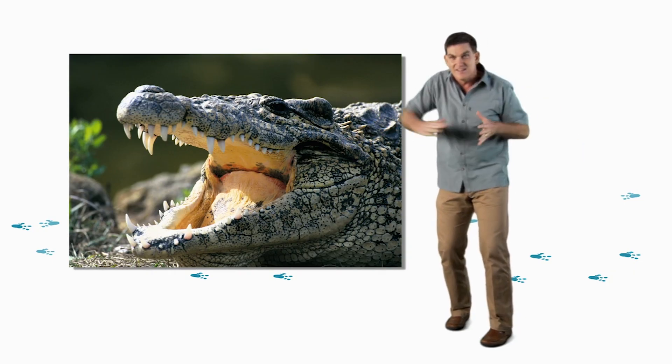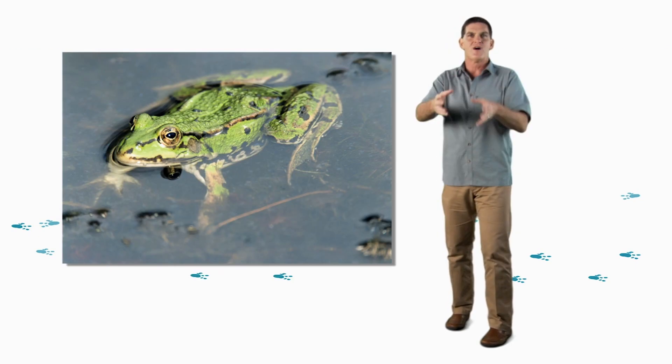That's cool. Paleontologists have also found trackways of sprawling crocodiles and slithering snakes and hopping frogs.